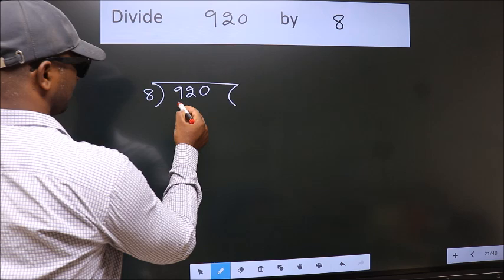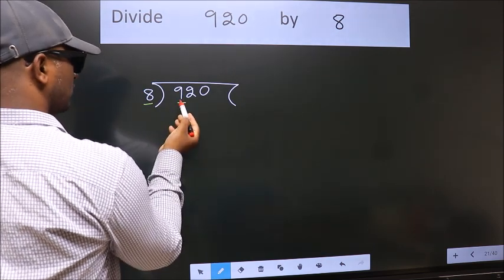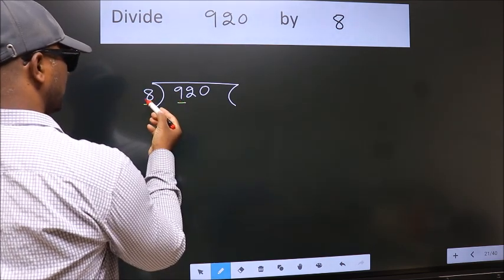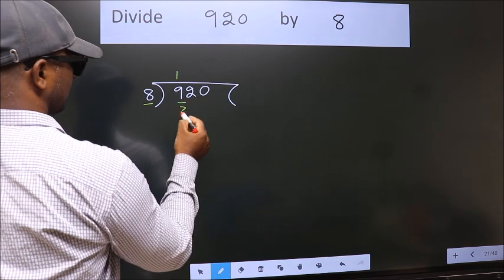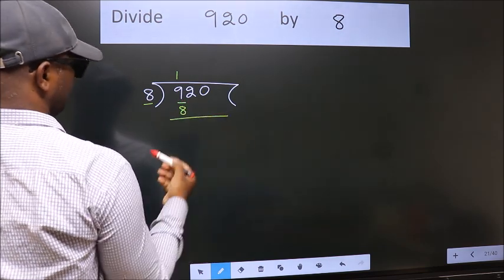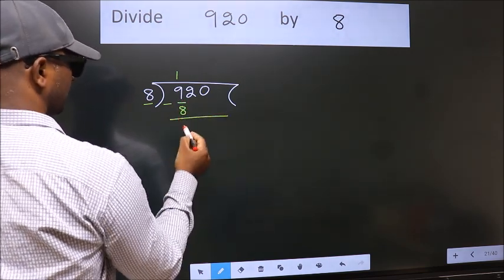Here we have 9. Here 8. A number close to 9 in 8 table is 8 once 8. Now we should subtract. We get 1.